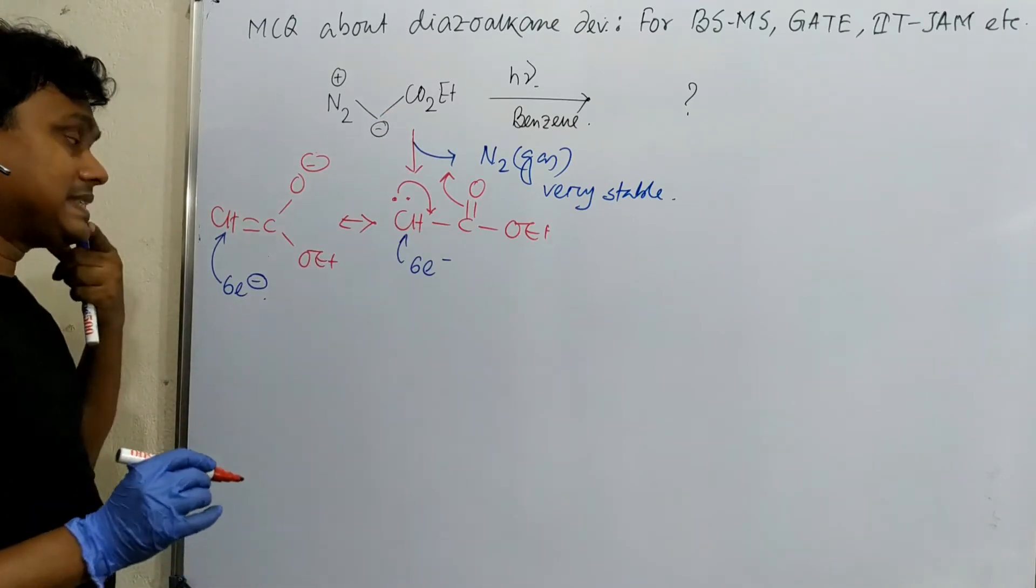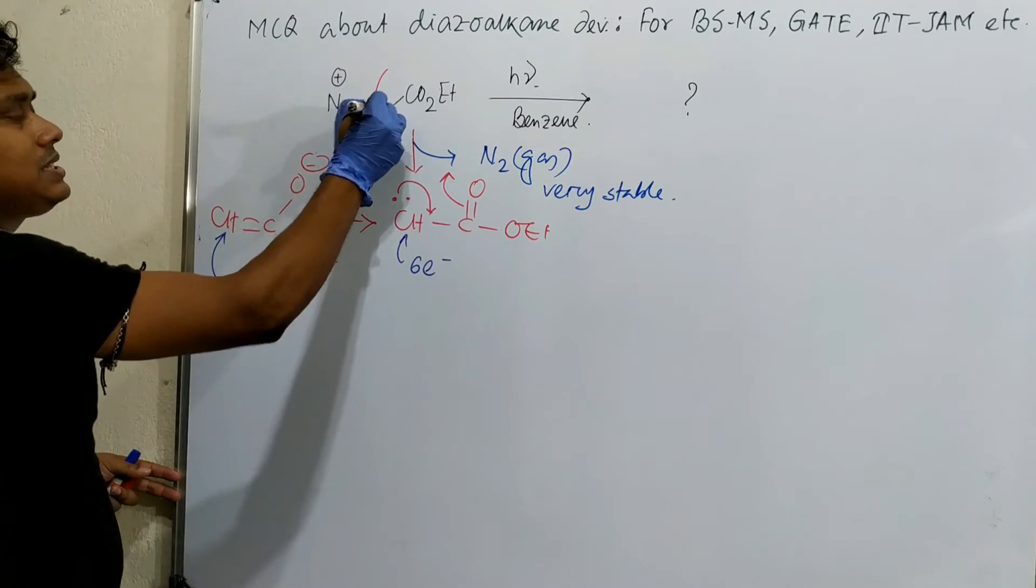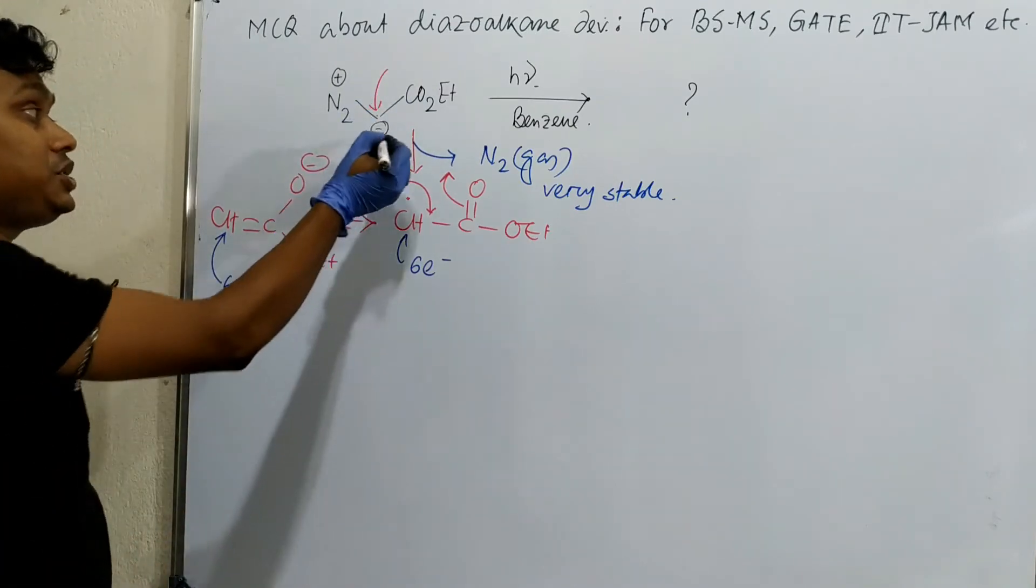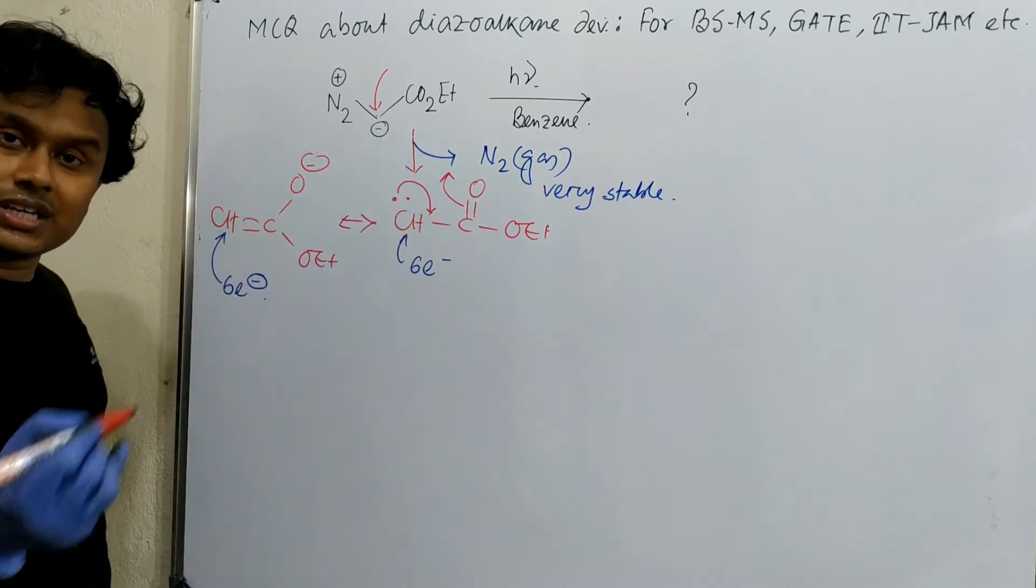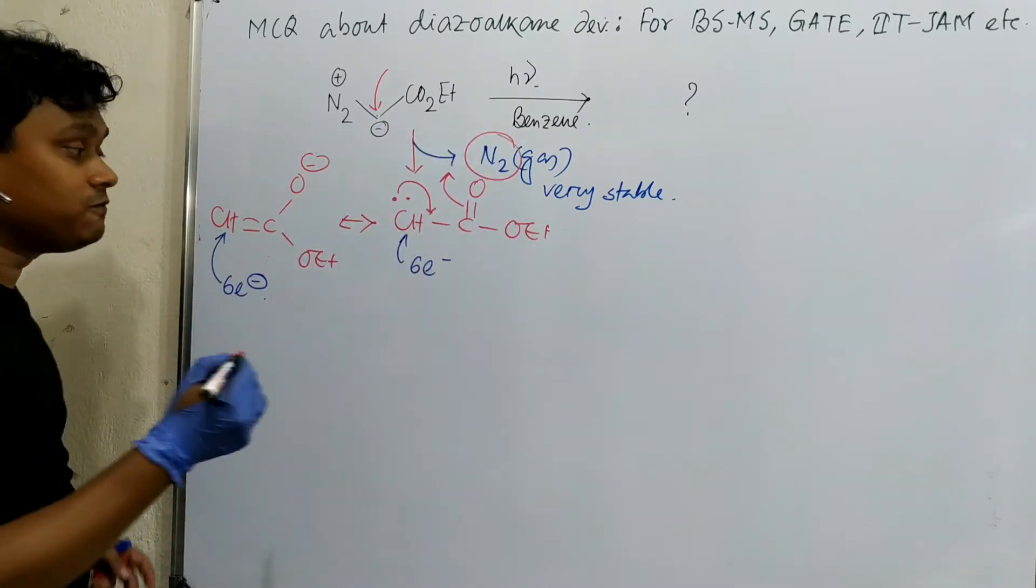If you think about this reagent, this reagent is more reactive. Why? Because first of all, you may consider this charge is stabilized by conjugation with this carboxyl group. This is a very good thing. Second, this is reactive because this carbon is actually initially not that much deficient. It is initially stabilized. But after the breakage, after elimination of nitrogen gas, this becomes very very reactive.